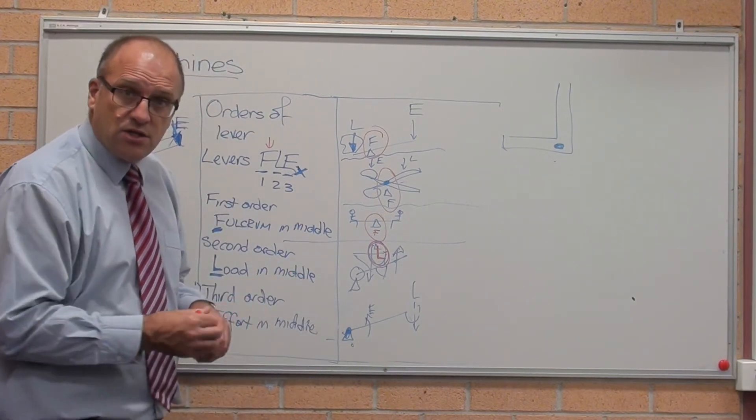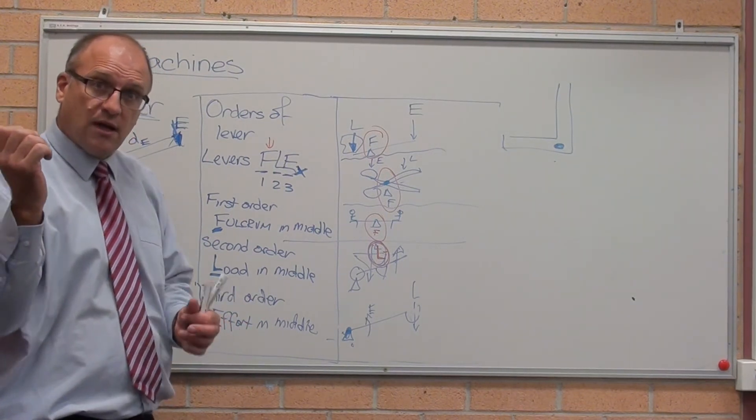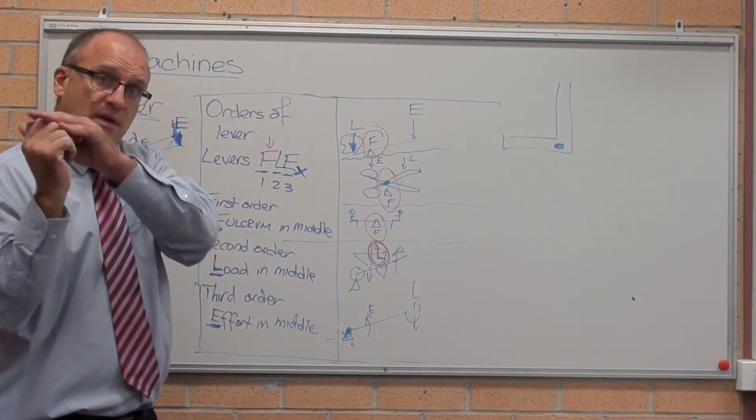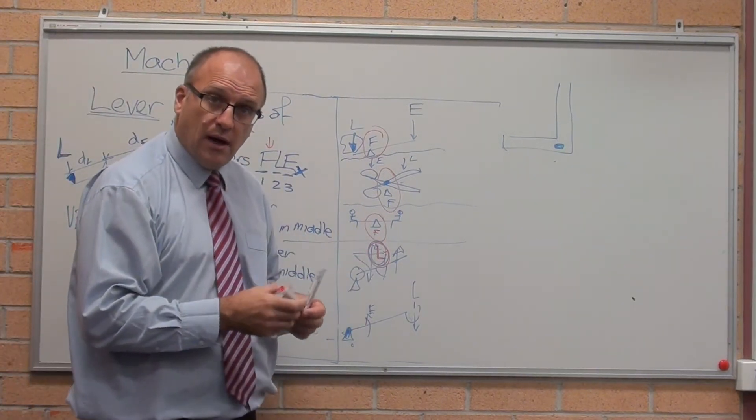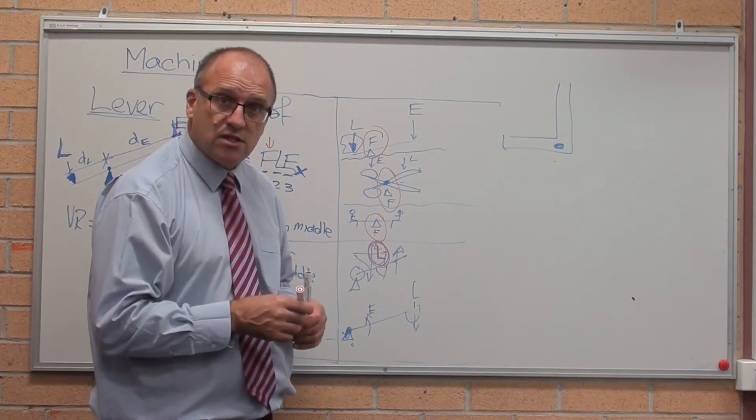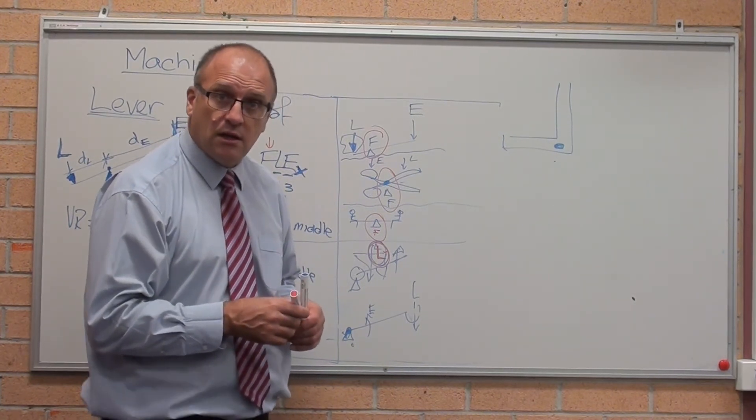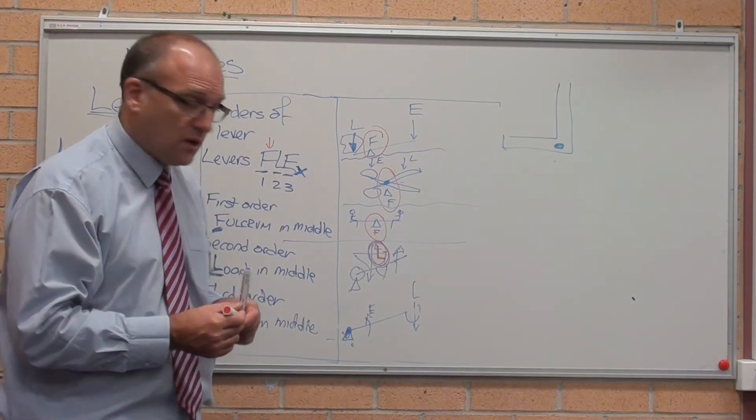The indigenous cultures had the woomera, the spear thrower. It's also a third order lever. Fulcrum, effort, the load was way back there. And you could throw a spear about 300 metres, 200 metres, with accuracy and a lot higher velocity, simply due to that magnification effect that you get in a third order lever.